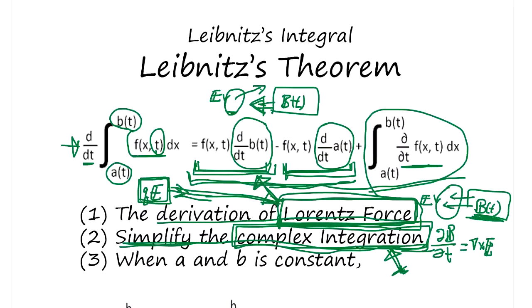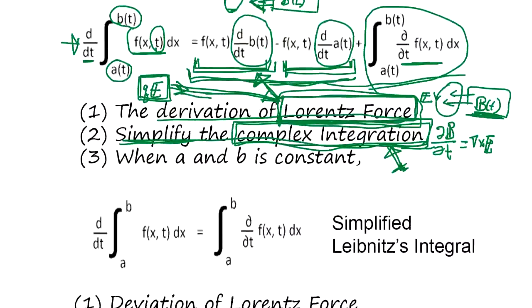Now, when A and B, this boundary is constant. So, we get simplified Leibniz integral.